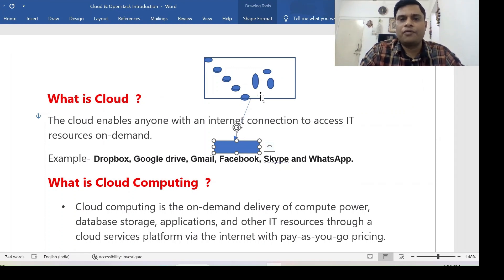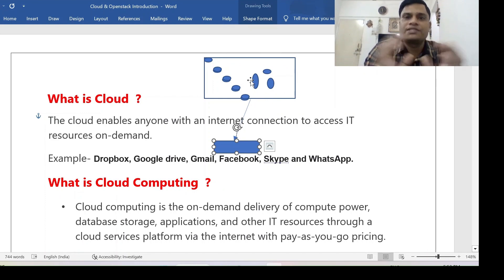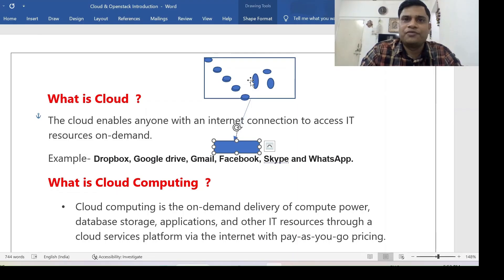You can see these resources either on a mobile or on a computer or desktop. Simply, you can define cloud as: the cloud enables anyone with an internet connection to access IT resources on demand. Whatever you require — Dropbox, Google, Google Drive, Gmail, Facebook, Skype, WhatsApp, Instagram, or any application — you can use it and after use you can delete it from your computer. These resources remain available in a virtual space called the cloud, and through the internet you can use them.